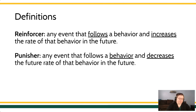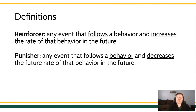A punisher is kind of the opposite. It's something that has changed in the environment, something that the environment produces. But this event is presumed to be aversive because it decreases the future rate of that behavior. We can generally evaluate this based on the effects that it produces. But where do these stimuli come from?